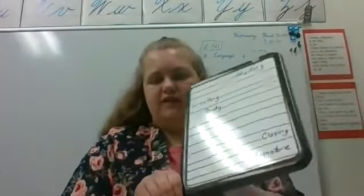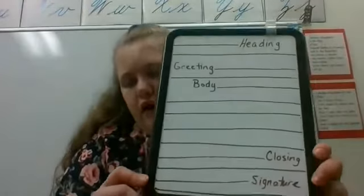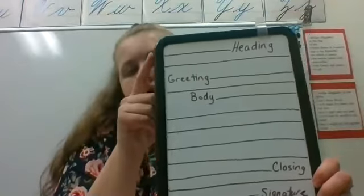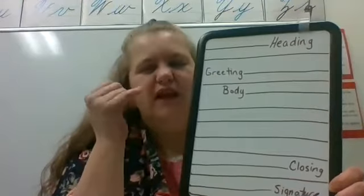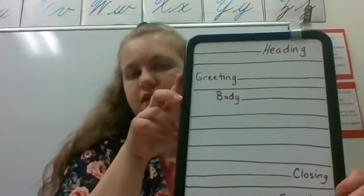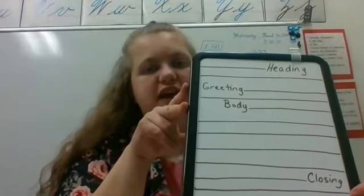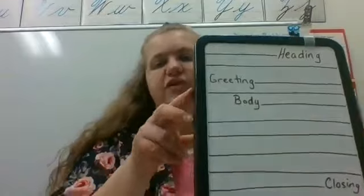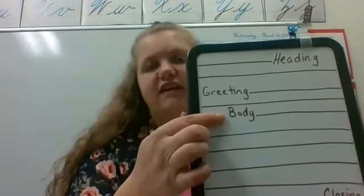I'm going to go over the rest of the parts and then read you this letter. Your greeting goes on the left side — you skip one line or leave a small space. The greeting should say 'Dear so-and-so' — Dear Mom, Dear Dad, Dear Grandma, whoever. Then for the body, notice that you don't start right at the line because you're supposed to indent.